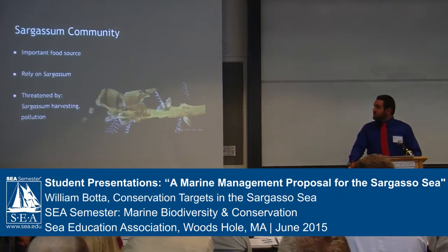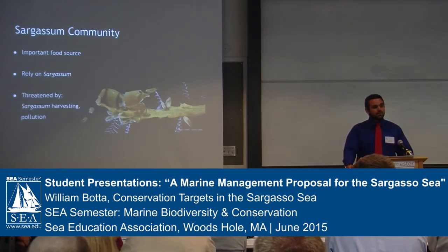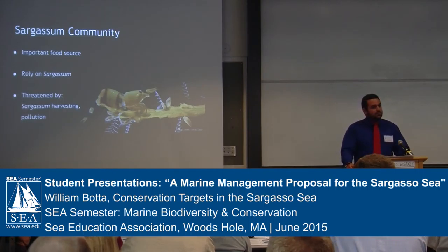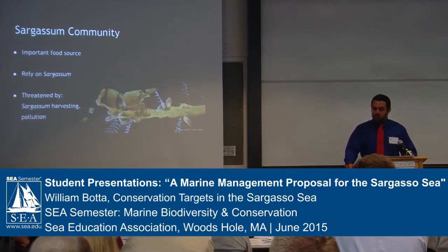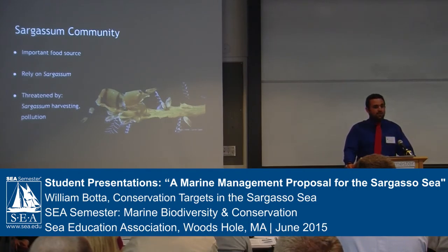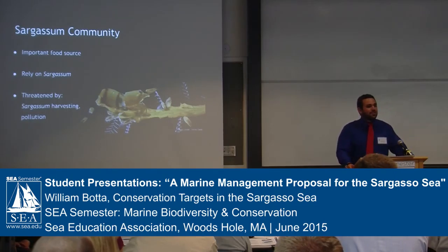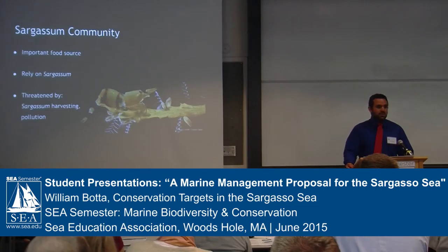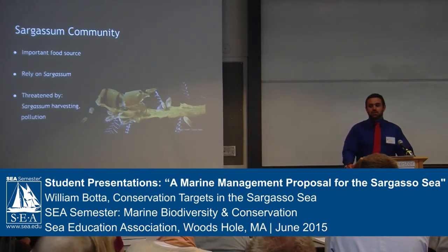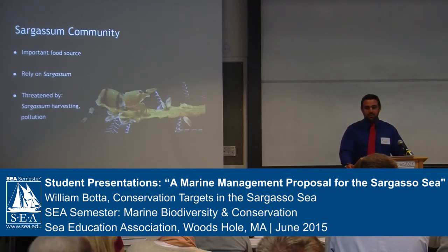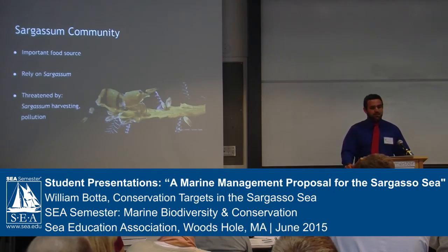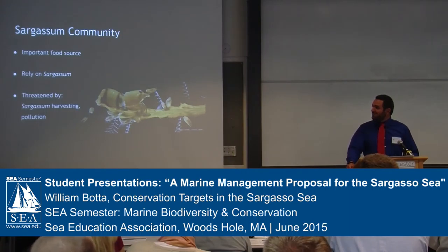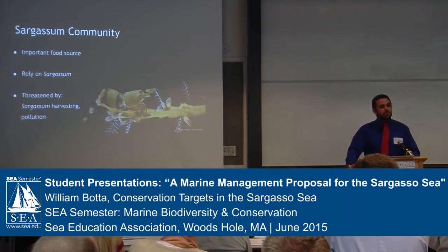The sargassum weed is very important, but the most important reason is because of the sargassum community that lives on and around it. There are hundreds of species of plankton that use the entire area as a food source, providing energy for other species. Along with those planktonic species, there are also 10 endemic species — found nowhere else in the world — that rely on sargassum as a food source and home. They've evolved alongside it and blend in; if found anywhere else they'd be conspicuous and eaten rapidly. The sargassum is currently threatened by sargassum harvesting and pollution.